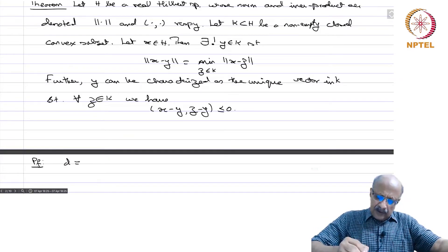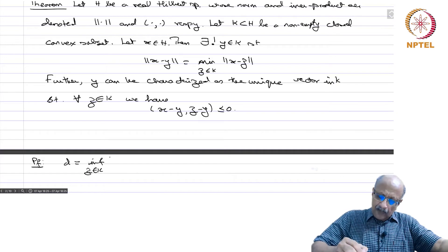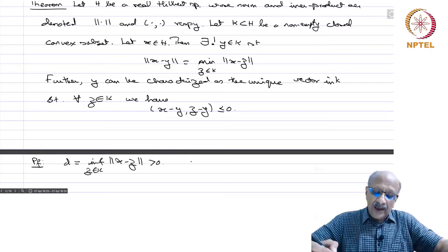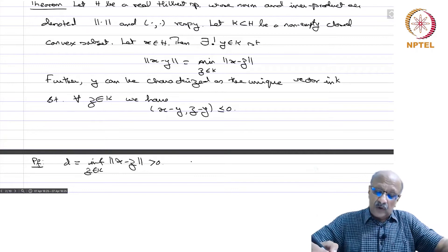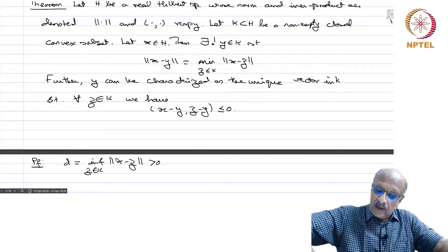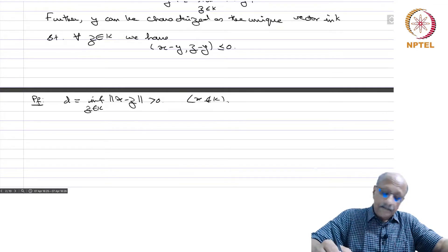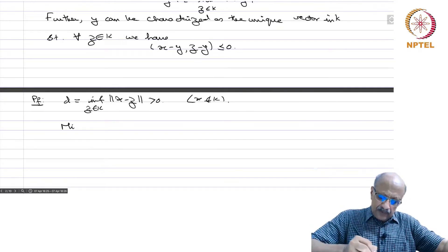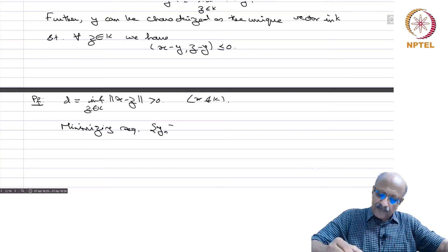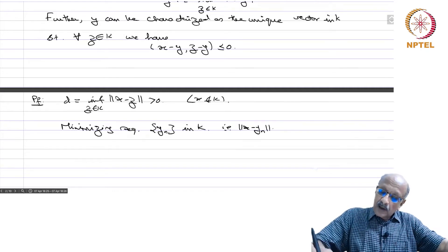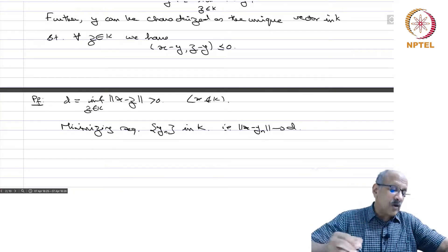Proof. Let d be the distance, that is, the infimum over z in K of the norm of x minus z, which is strictly positive if x is not in K. If x is in K, then x itself is the unique closest point and the distance is zero, so there is nothing to do. So let us take x not in K. Then we take a minimizing sequence, that is, the norm of x minus y_n goes to d. You can always do this because you have an infimum.